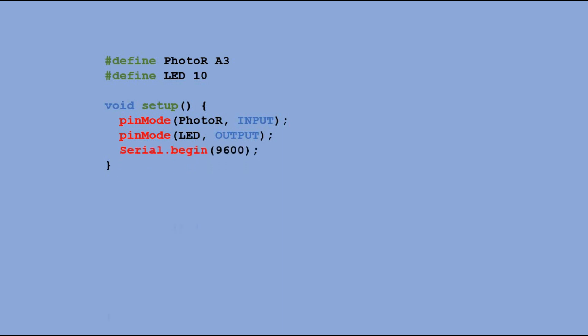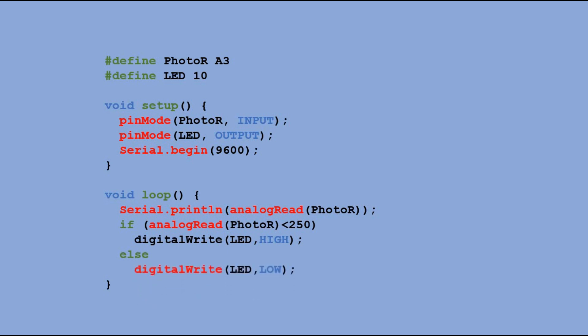In the main loop, we first output the photoresistor reading into the serial monitor and then we check if the value read is below 250. If it is, we turn the LED on; if it is not, we turn the LED off.